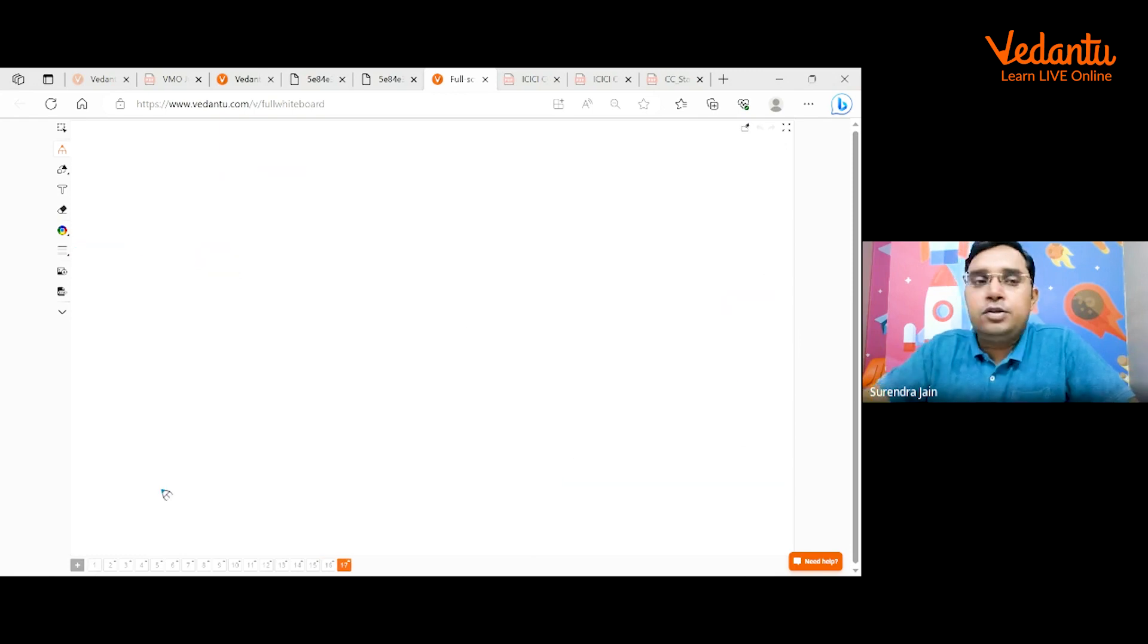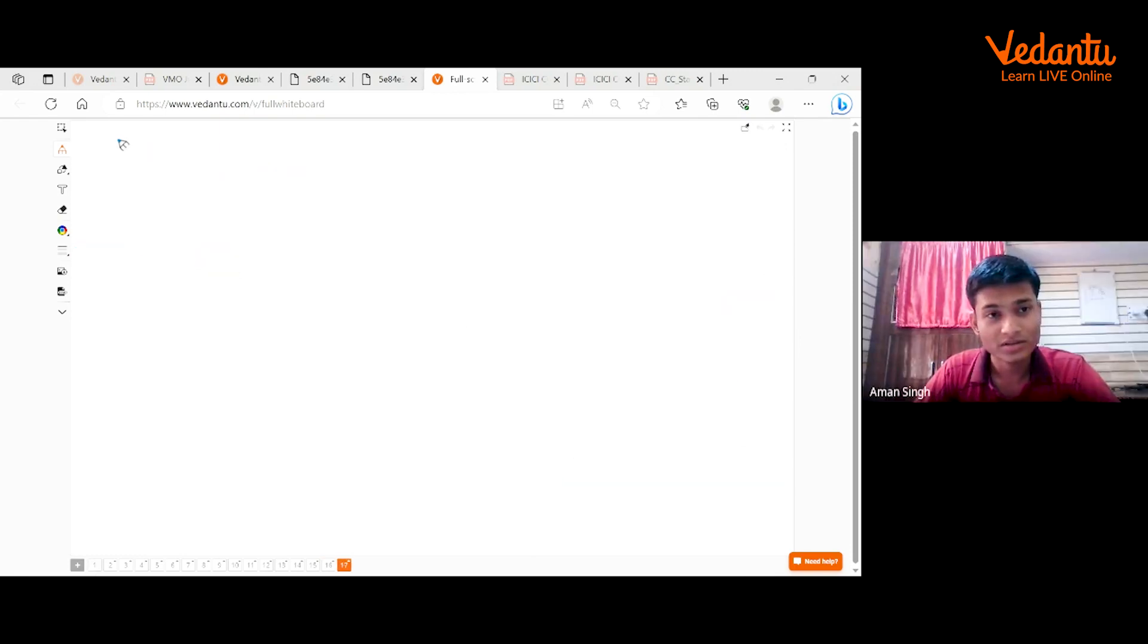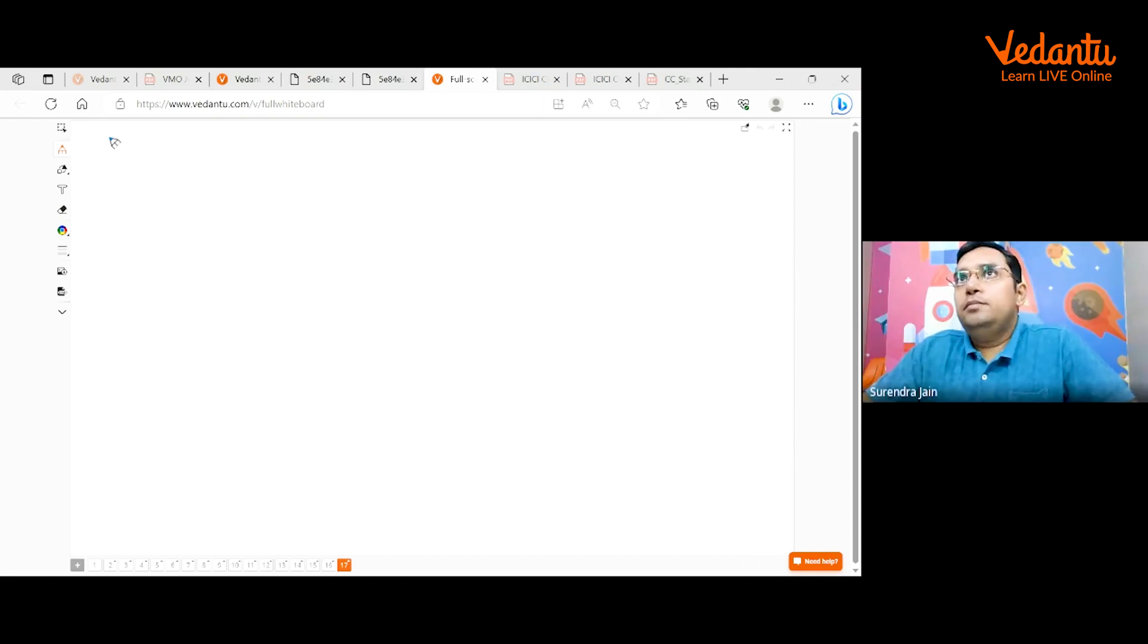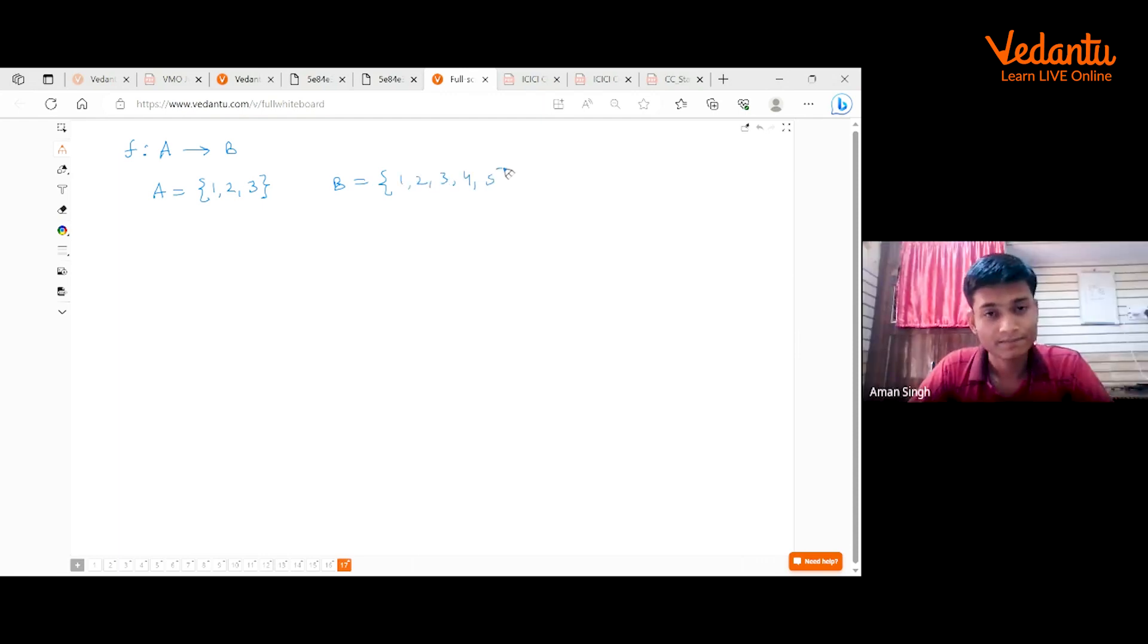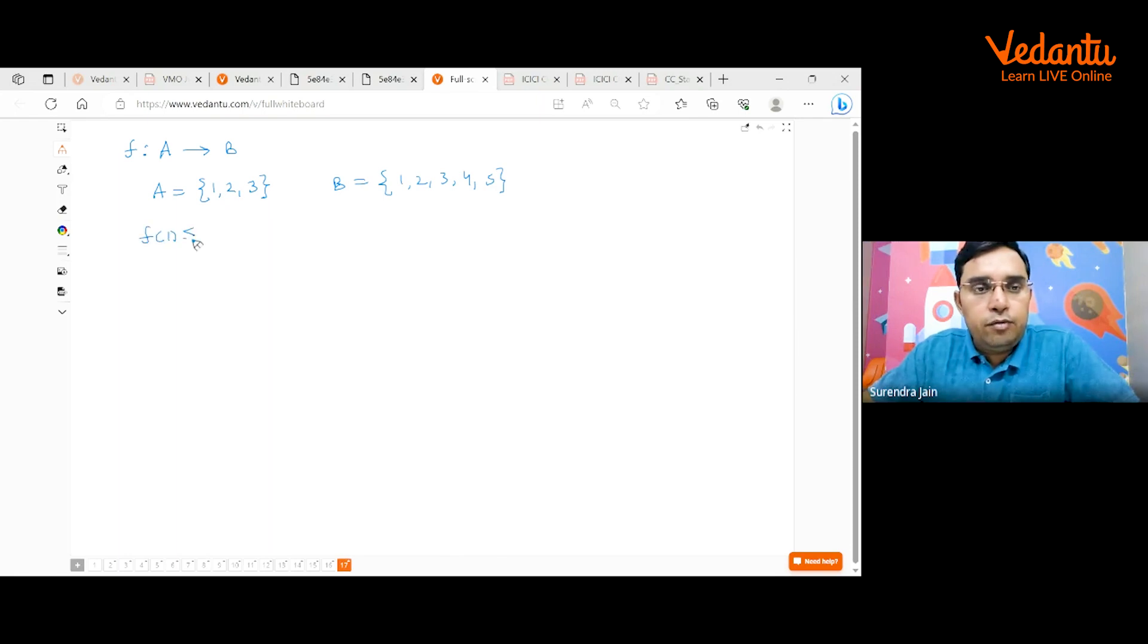Actually, what are the topics you said? Differential calculus and Combinatorics. Okay. So my question is that there is a function F: A to B. And A is having three elements: 1, 2, 3. And B is having five elements: 1, 2, 3, 4, 5. Now you are given that F(1) is less than or equal to F(2), F(2) is less than or equal to F(3). Find number of possible functions F.